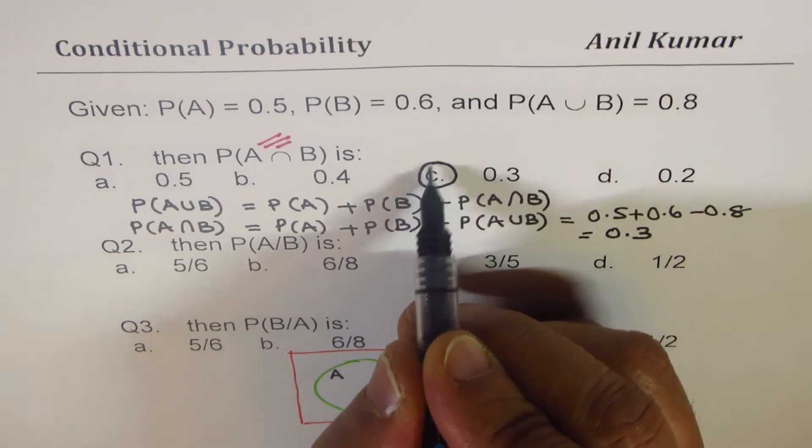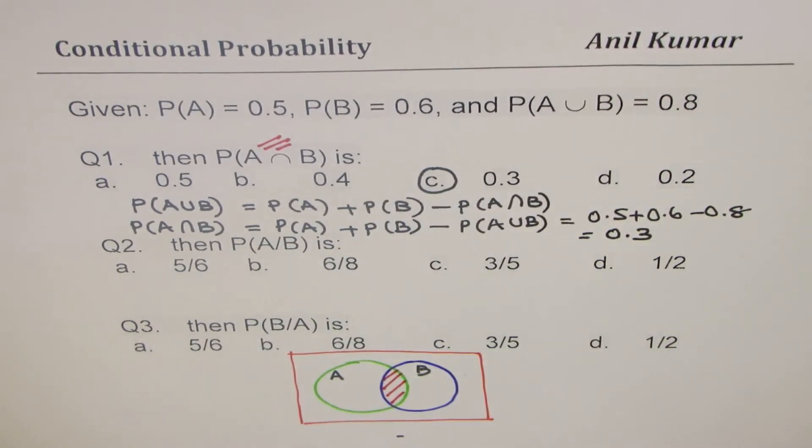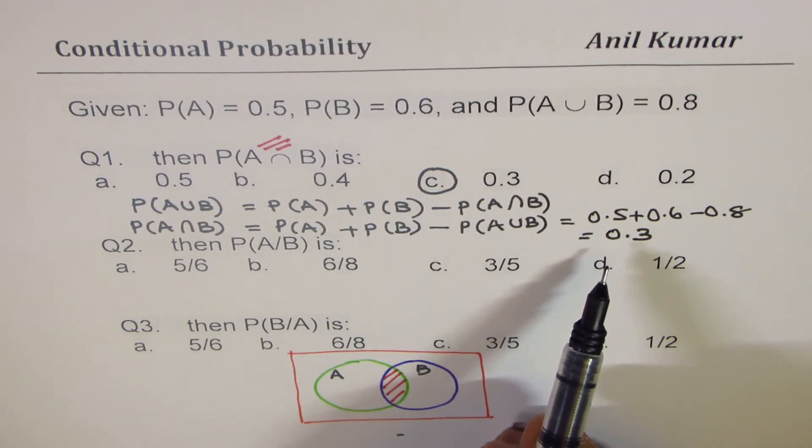So the option C is the right option. Perfect. So that is how you get this particular probability.